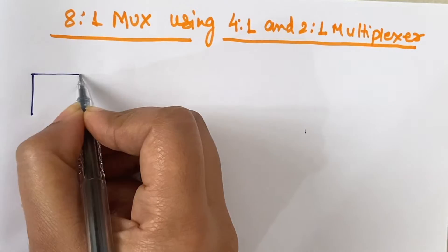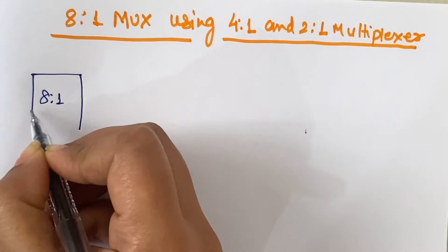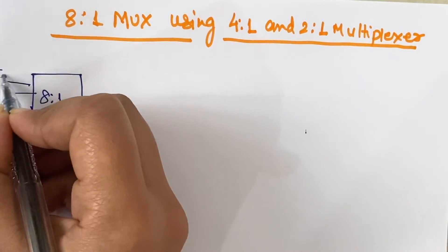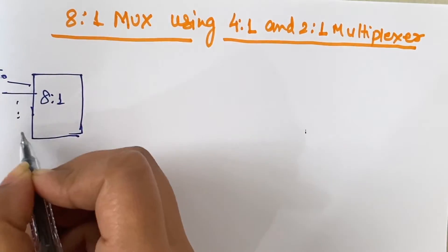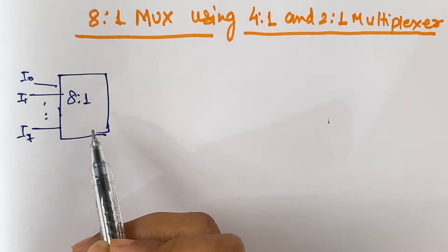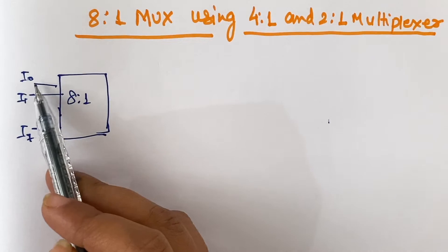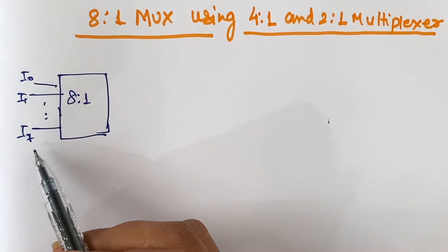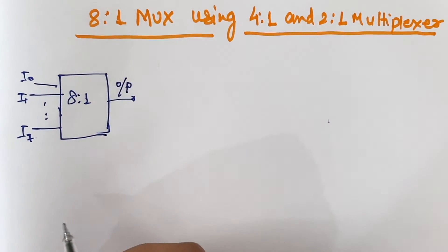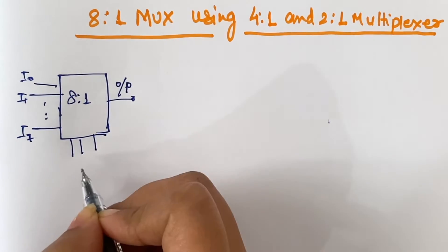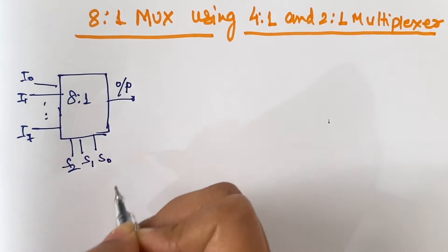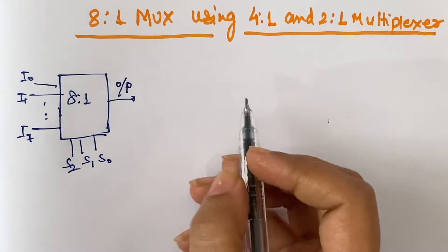For an 8-to-1 multiplexer, we have 8 input lines: i0, i1, i2, through i7, and 1 output line, as well as 3 select lines. We have already discussed this previously.